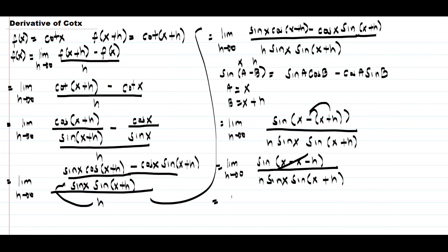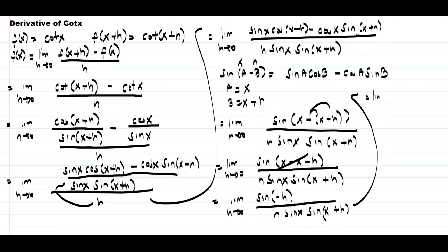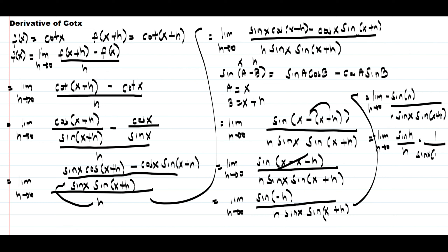We can cancel x and negative x, which gives us the limit as h approaches 0 of sine of negative h over h, times 1 over sine x times sine of x plus h. We rewrite this as negative limit as h approaches 0 of sine h over h, times 1 over sine x times sine of x plus h. We know that the limit of sine h over h as h approaches 0 equals 1, so this becomes negative 1.